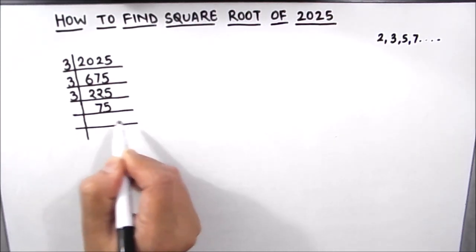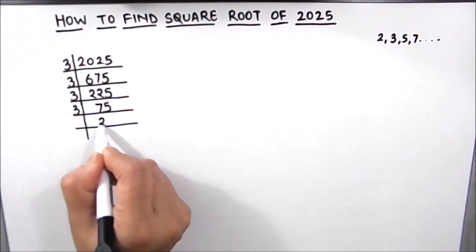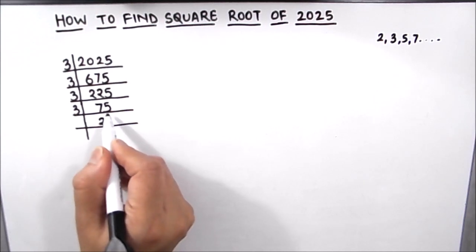75 is also divisible by number 3. 3 times 2 is 6, 1 is remainder, then this becomes 15, and 3 times 5 is 15.